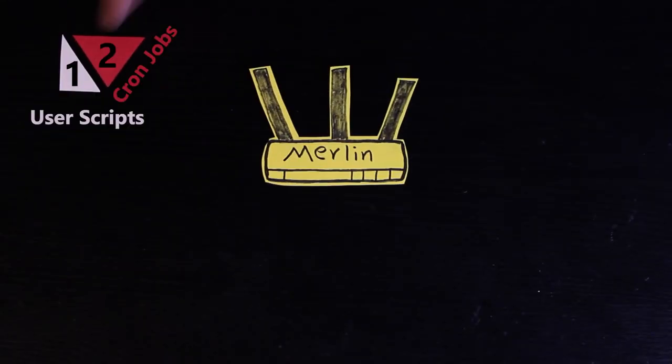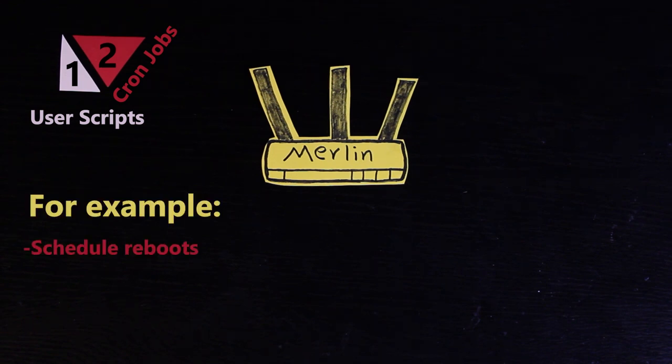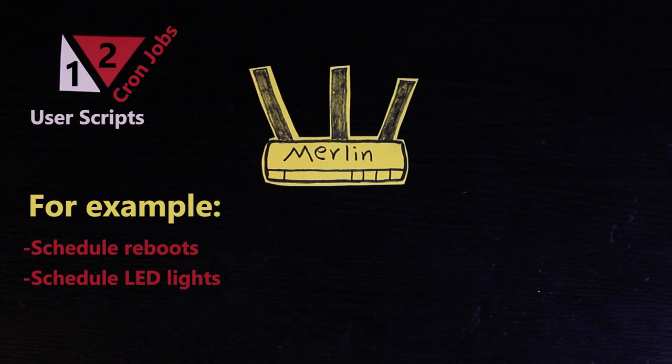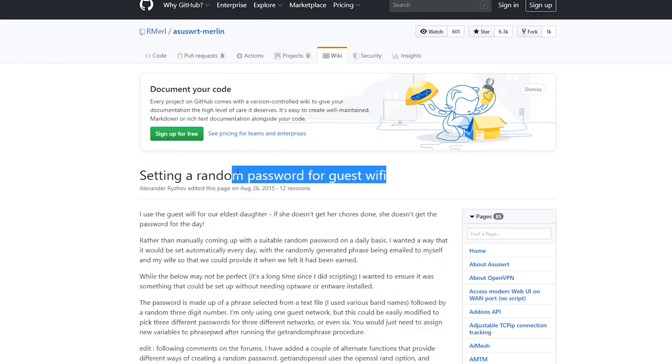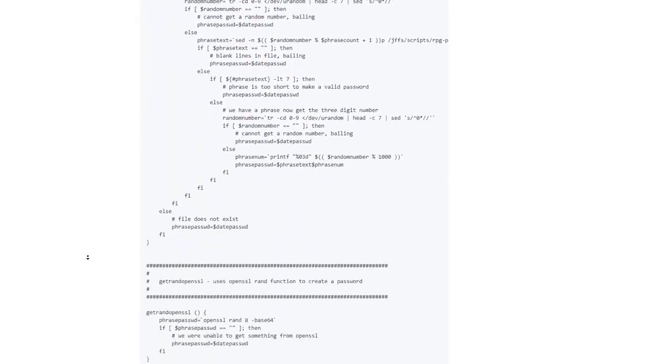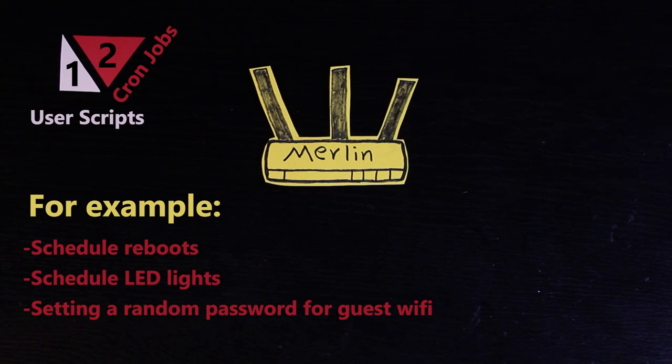In addition to user scripts, I can also use cron jobs to schedule tasks. For example, I can schedule the router to reboot every day automatically or schedule it to turn its LED lights off at night and turn them back on in the morning. Or as you can see here, there's a script that with the help of cron jobs can generate a random password for the guest Wi-Fi every day, which honestly is something interesting.